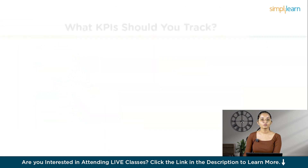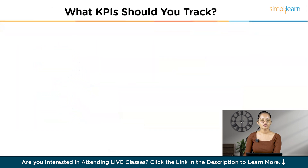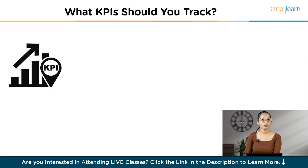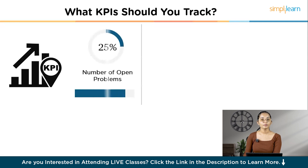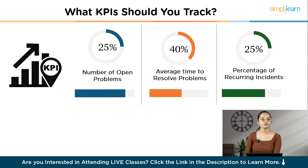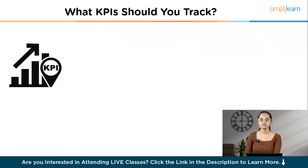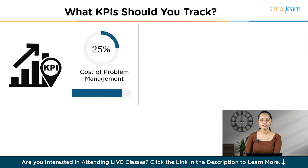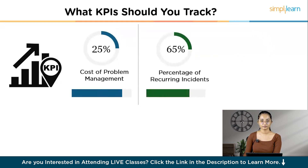To track effectiveness, we monitor key performance indicators such as number of open problems, average time to resolve problems, percentage of recurring incidents, cost of problem management activities, and customer satisfaction with problem resolution.